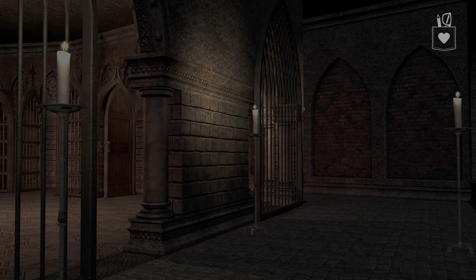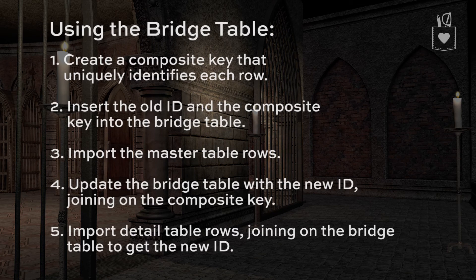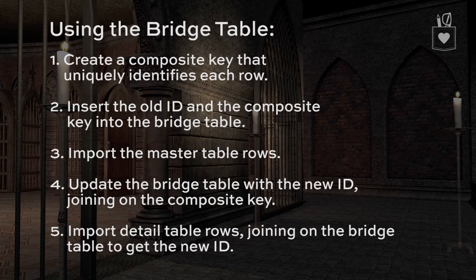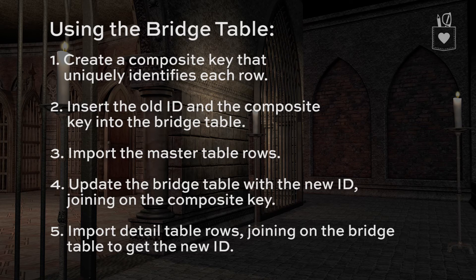The way that we would use the bridge table is five steps. First, we'd create a composite key that uniquely identifies each row. We'd insert the old ID and the composite key into the bridge table. We'd import the master table rows, update the bridge table with the new ID joining on the composite key, and then import the detail table rows, joining on the bridge table to get the new ID as part of that insert process.